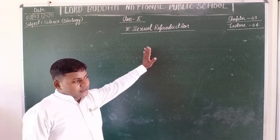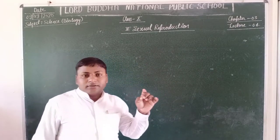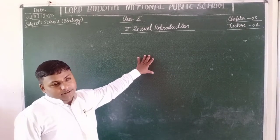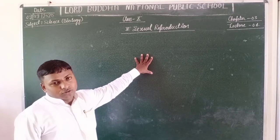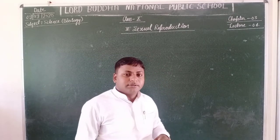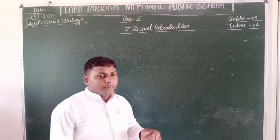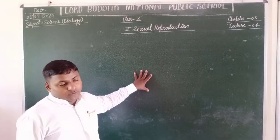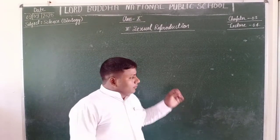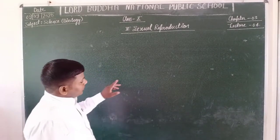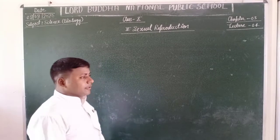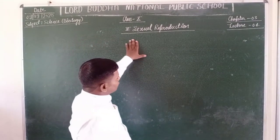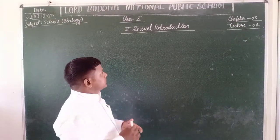The formation of a zygote takes place by a process called fertilization. After fertilization, the zygote further goes through the developmental process, and with the completion of this developmental process, the embryo is formed. This embryo, after a developmental period, gives rise to the birth of an individual.